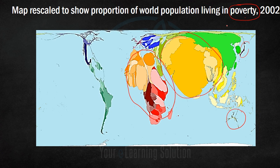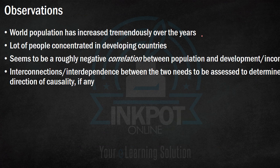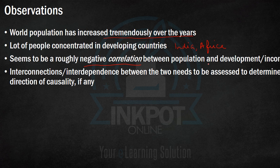Comparing this graph to the previous one, it is as if the countries or continents which have high population also have a high proportion of poor people — they have higher poverty rates, and this is what these graphs are telling us. We can make some observations: world population has increased tremendously over the years, and a lot of people are concentrated in developing countries.